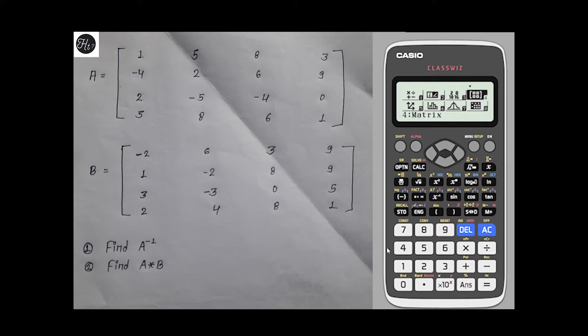Select 4. Now we'll define matrix A and B. First, let's define matrix A. We have 4 rows and 4 columns, so 4 and 4. Now we'll define matrix A.